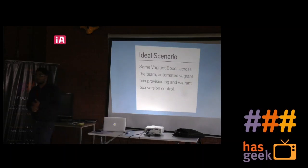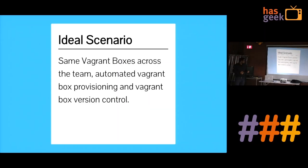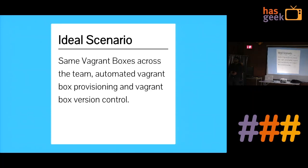In an ideal scenario, you'll have automation scripts to provision a Vagrant box and the entire team using the same box. Vagrant also introduced Vagrant Cloud, where you can version-control your Vagrant box. It's not like regular version control where you can diff between versions — since you can't diff a binary .box file — but you can push new versions to the cloud.